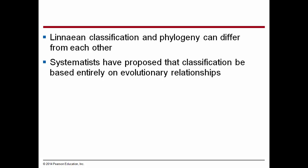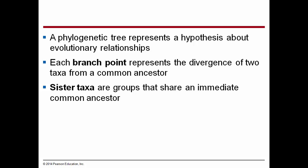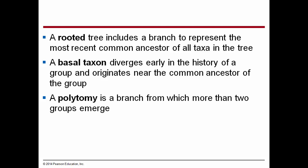Linnaean classification and phylogeny can differ from each other. Systematists have proposed that classification be based entirely on evolutionary relationships, and this is the prevailing view. A phylogenetic tree represents a hypothesis about evolutionary relationships. Each branch represents a divergence of two taxa from a common ancestor — where they join, that branch point represents the common ancestor. Sister taxa are groups that share an immediate common ancestor. A rooted tree includes a branch to represent the most recent common ancestor of all taxa in that tree.